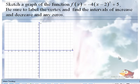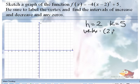Be sure to label the vertex and find the intervals of increase, decrease, and any zeros. Looking at our function f of x and the general form, what's h? 2. And what's k? Positive 5, because it says plus k. So our vertex is at 2 comma 5.